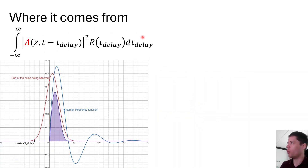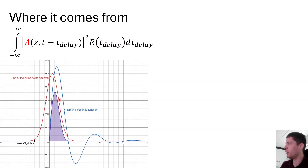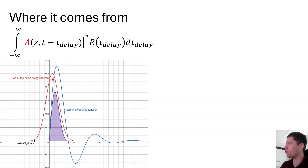Let us review this convolution expression. Essentially it says that if we want the impact of the Raman effect at some point of a pulse at time zero, we need to integrate over all the different powers present in the past, weighted by the total response function. The total multiplication is just the area of this purple curve. We need a convolution because the duration of the pulse is very similar to the duration of the Raman response function, so we have to look at exactly what power was present at each exact time in the past.